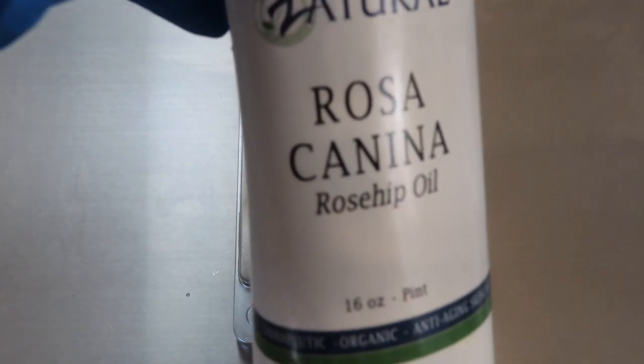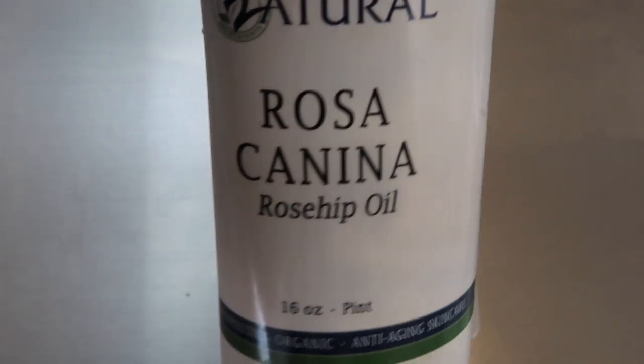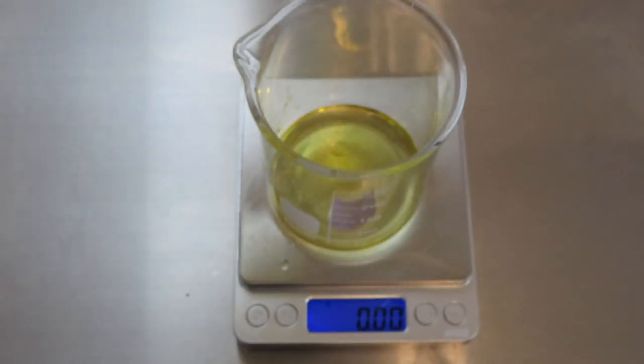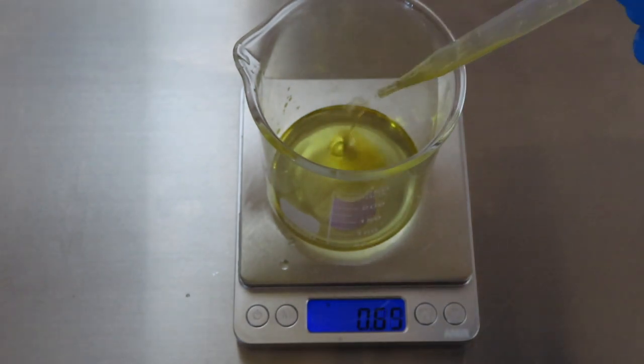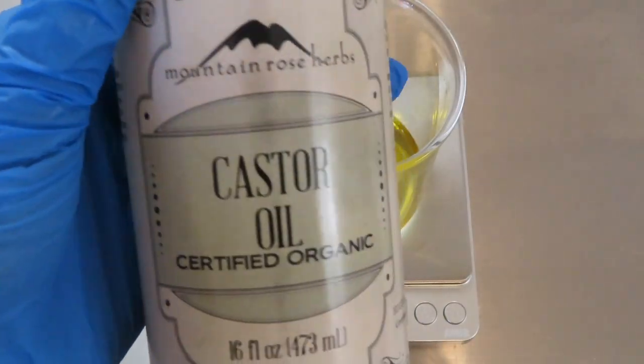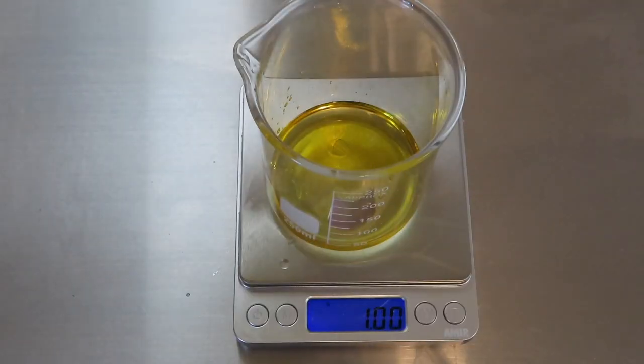I measured it to the amount I wanted. Then I added the next one, which is rosehip seed oil, another of my favorites. We're doing the same thing. This should come as no surprise. You're just adding them to the amount specified in your formulation. Last one is castor oil.